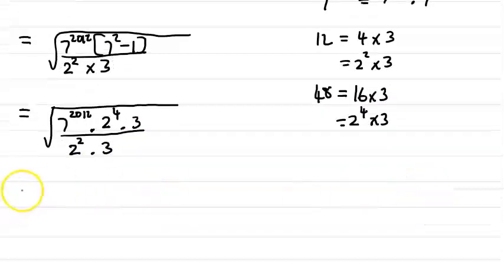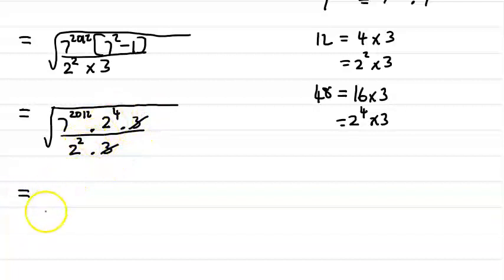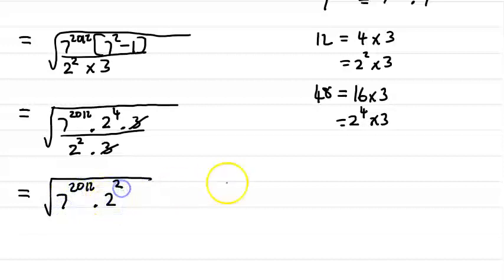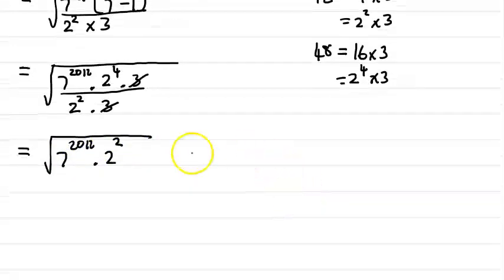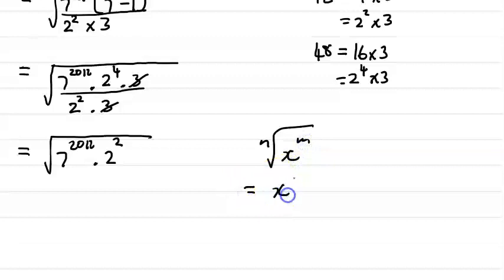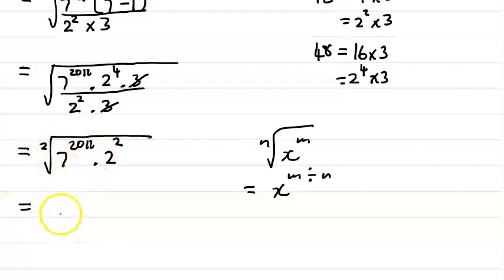Now let's simplify: the 3s cancel, and 2 to the 4 divided by 2 squared gives 2 squared. So we're left with 7 to the 2012 times 2 squared — all still under the square root. Using the law that the nth root of x to the m equals x to the m over n: 2012 divided by 2 gives 7 to the 1006, and 2 squared divided by 2 gives 2 to the 1, which is just 2.